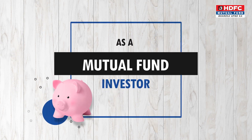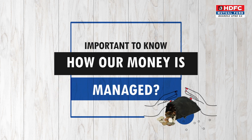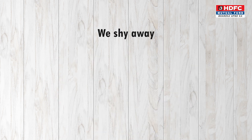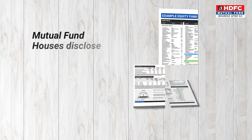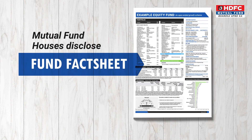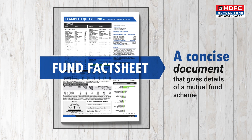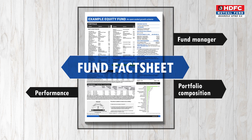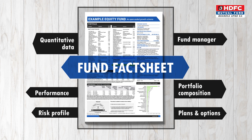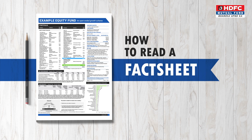As a mutual fund investor, it is important for us to know how our hard-earned money is managed. Yet, many of us shy away from this exercise as it looks too complex. To make this easier, mutual fund houses disclose a fund fact sheet every month. A fund fact sheet is a concise document that gives details of a mutual fund scheme along with its performance, portfolio composition and other details relevant to the scheme. Let us understand how to read and use a fact sheet for an equity fund to make sound investment decisions.